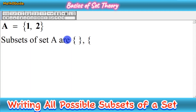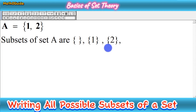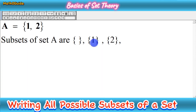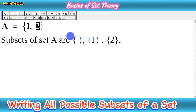After the empty set, we write all elements one by one. The first element is one, so the second subset is {1}. Next we write the second element, two, alone — so the third subset is {2}. We now have three subsets. The sequence is: first the empty set, then all single-element subsets. Since set A has two elements, we get two single-element subsets.